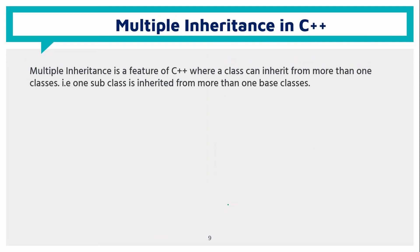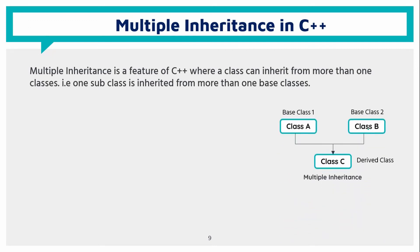Now we see multiple inheritance. In multiple inheritance, one subclass inherits from multiple superclasses. For example, class C can be written to inherit from both class A and class B.